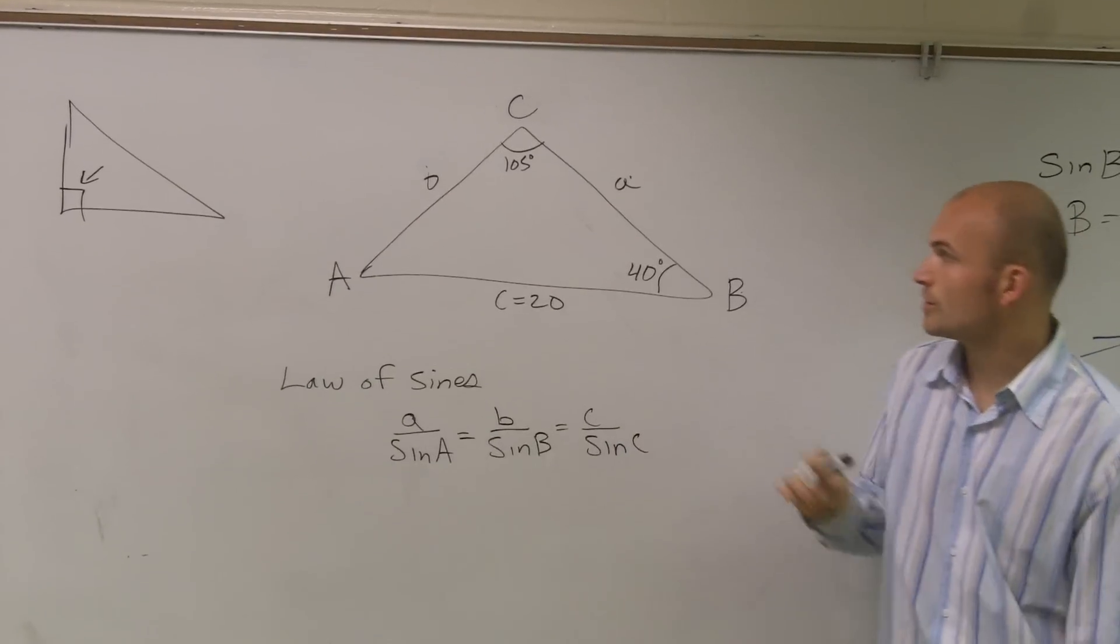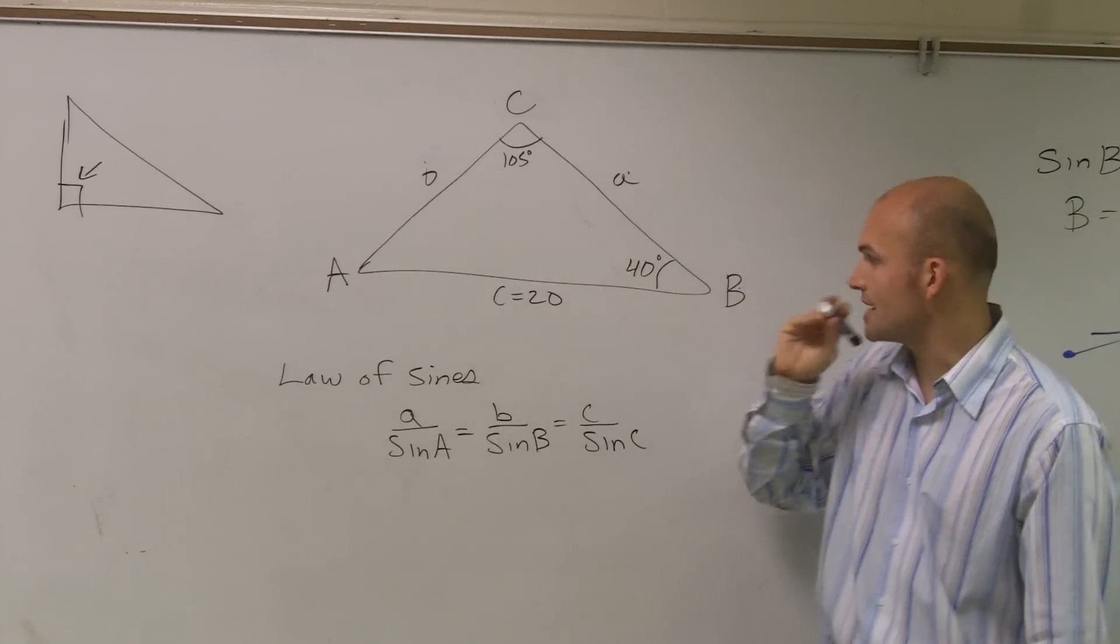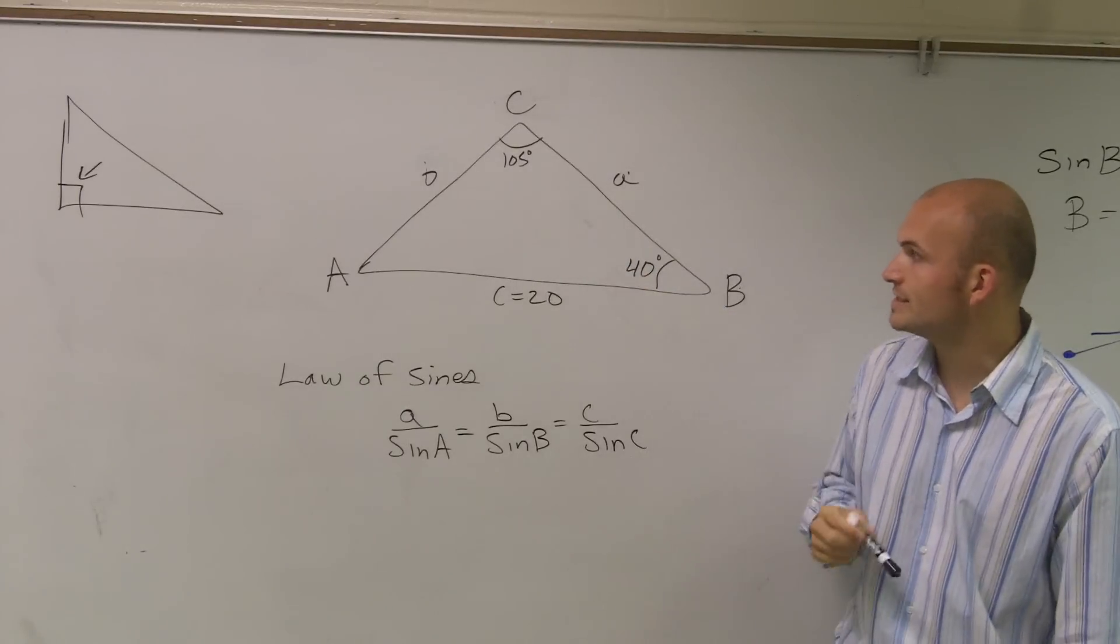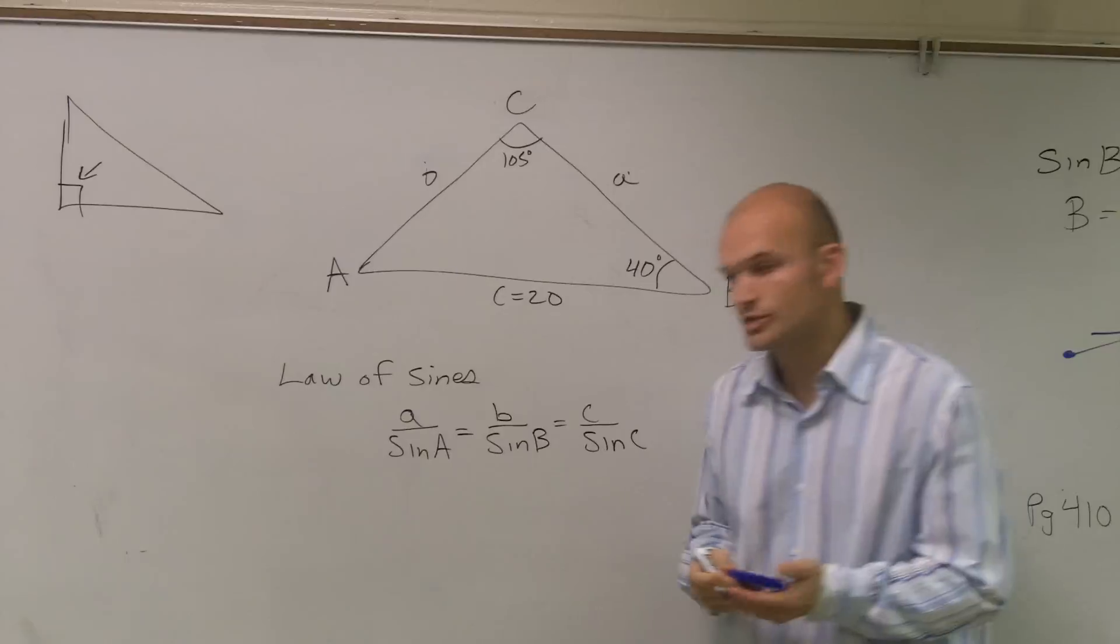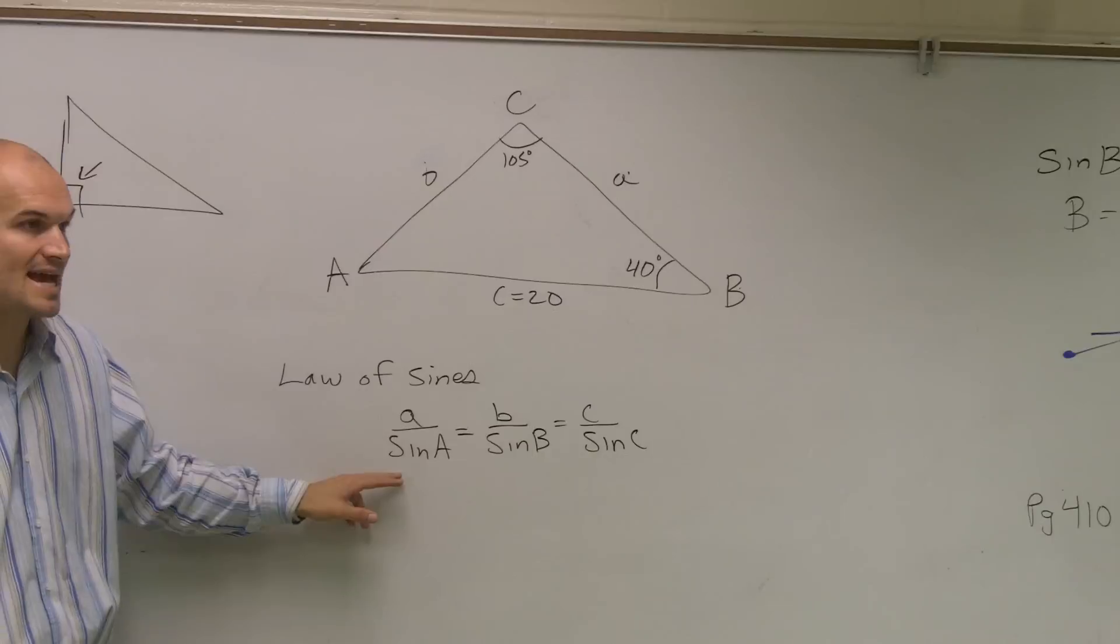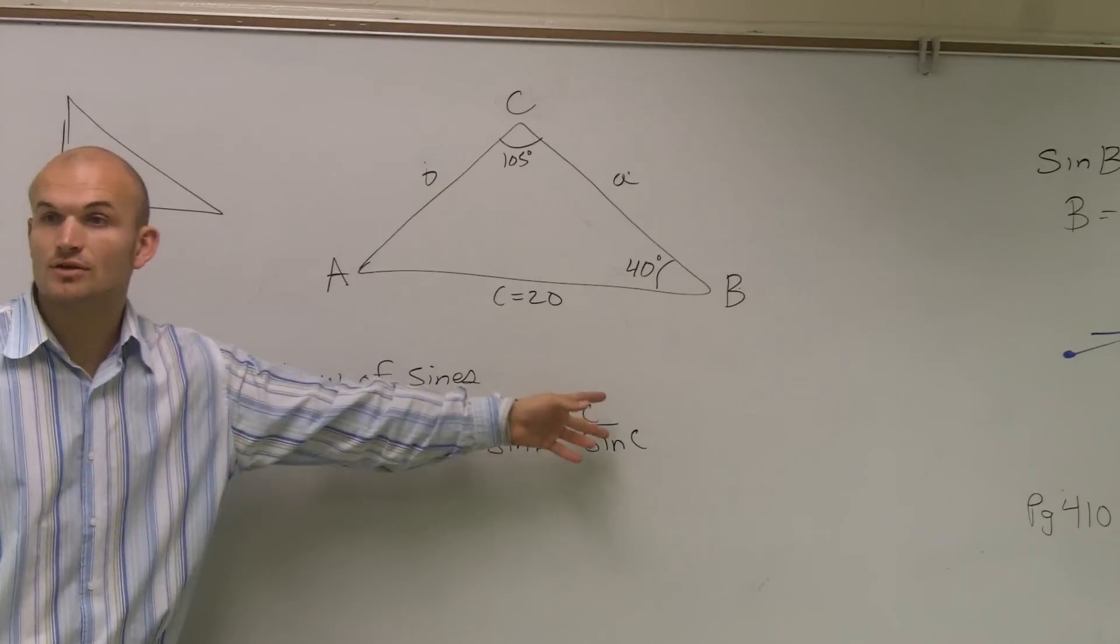Here's the way it works. We take a look at this, and we notice that we have 40 degrees, 105 degrees, and C equals 20. So the law of sines states that the proportion of a side length to its angle are equal for all the sides.